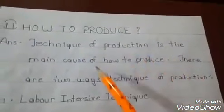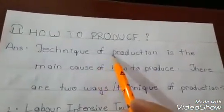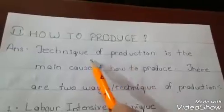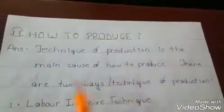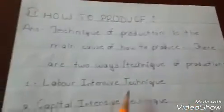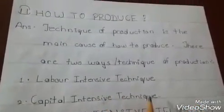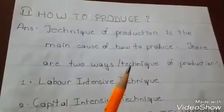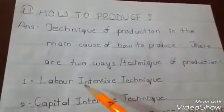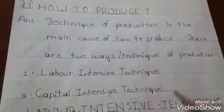The technique of production is the main focus of how to produce — in which method we have to produce a product. There are two ways and techniques of production: first, labor intensive technique, and second, capital intensive technique.